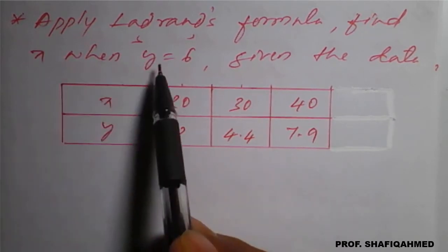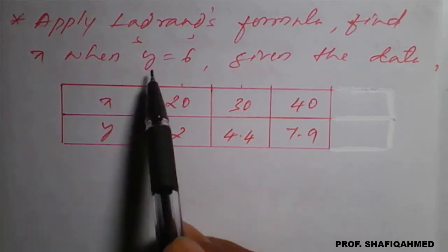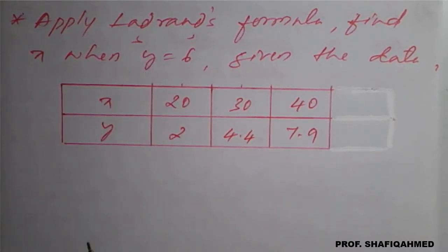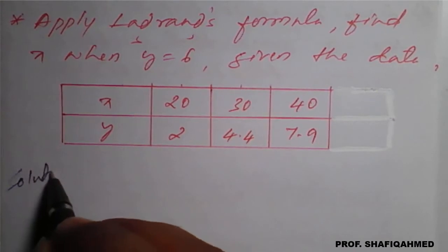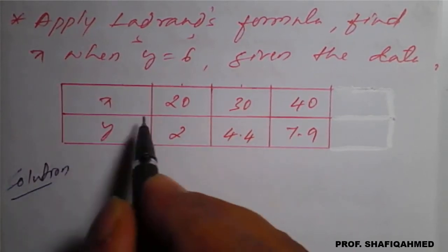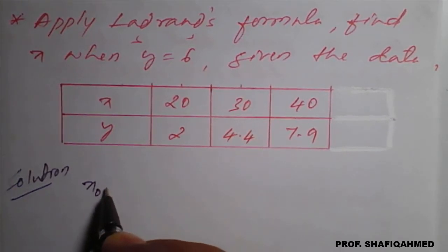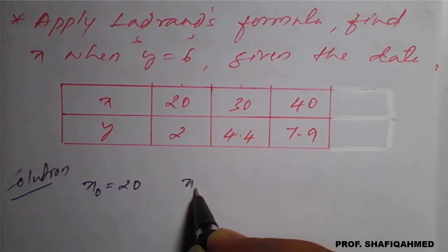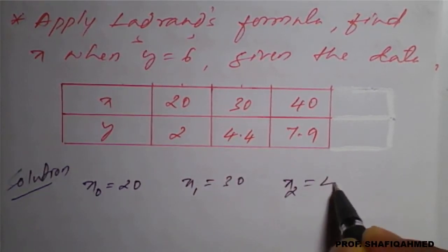Find x when y is 6, means we are going to find the value of x at y equal to 6. This means we are going to use inverse Lagrange's formula here. So given the data, x naught will be considered as 20, x1 as 30, x2 as 40.